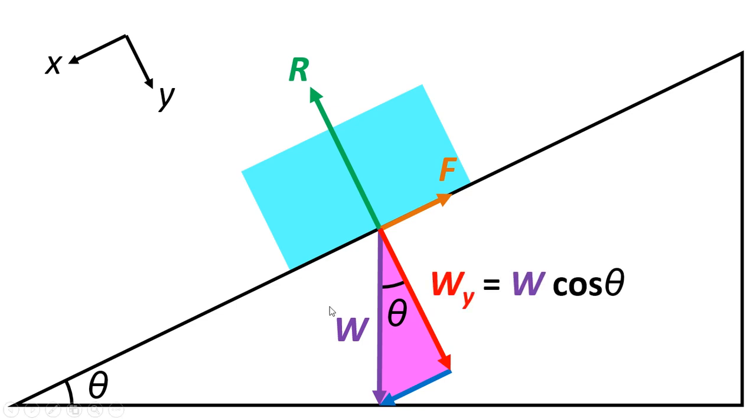The weight component in the y direction equals w cos theta, so we can work that out from trigonometry, and we can also write that as mg cos theta. Then the weight in the x direction is w sin theta, and we can write that as mg sin theta.